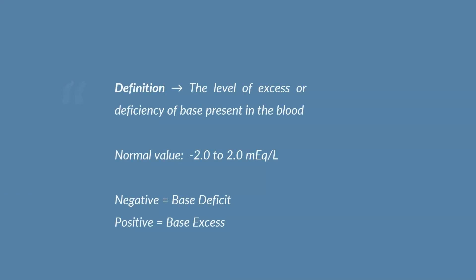The last lab value we're going to talk about when it comes to arterial blood gas results is the base excess and base deficit. This is actually one lab value that technically goes by two names.